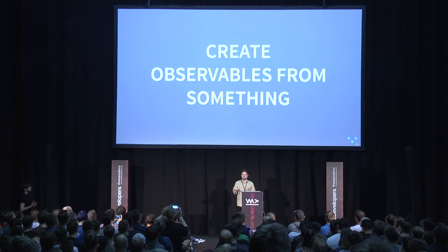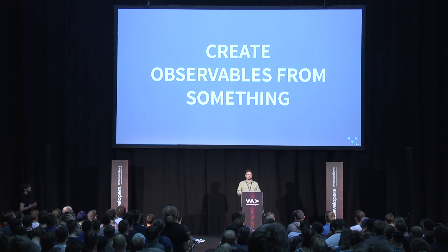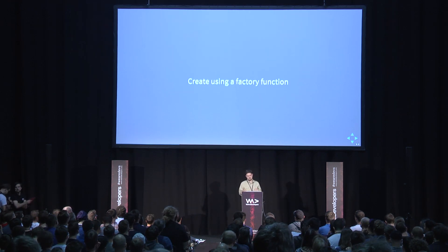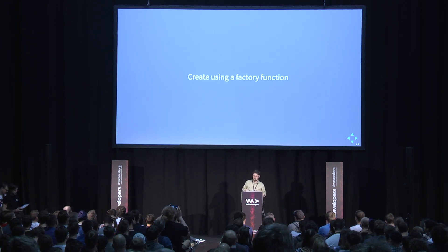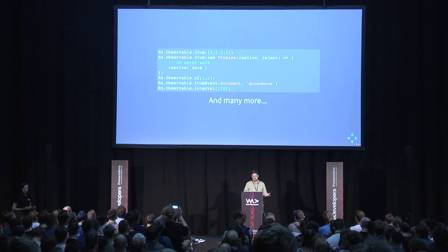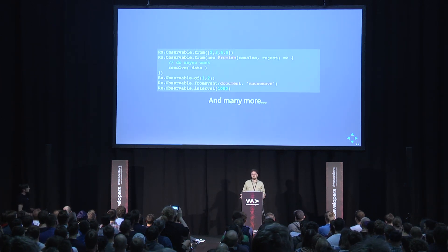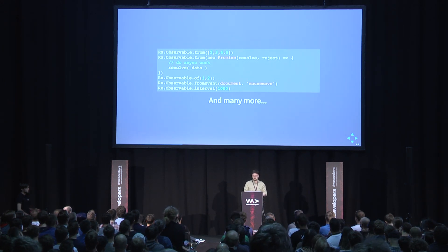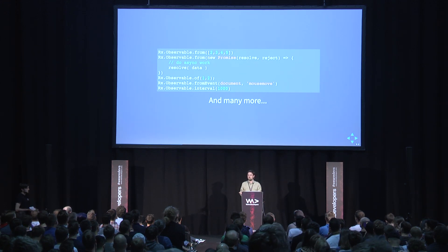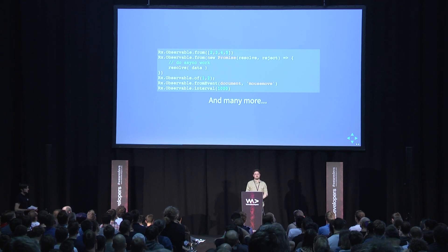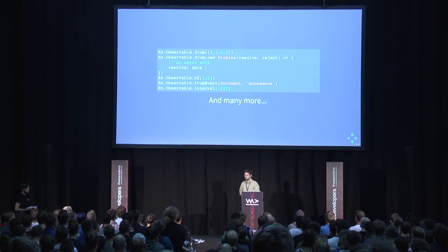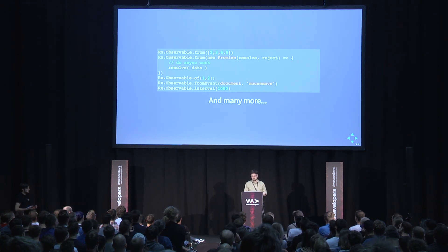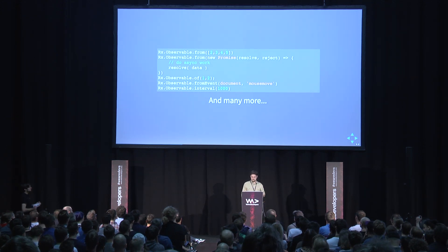The number of times you'll create a manual observer isn't many — you'll usually use a factory function. There are different options for creating observables. There are tons of factory functions inside RxJS: you can create from arrays, promises, static data using the 'of' operator, events, intervals, and so on. Herein lies the strength of RxJS — the ability to intermix different async concepts. Learn the different topics of async concepts you can intermix.